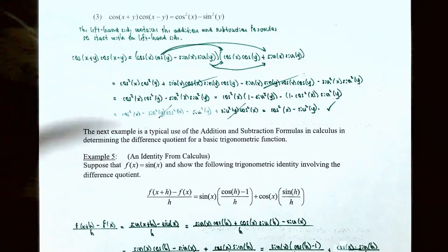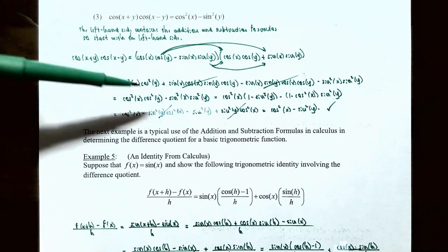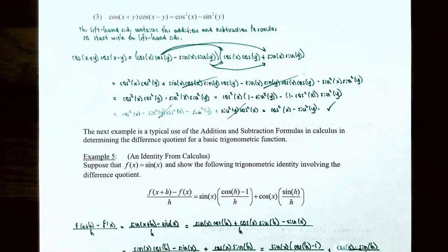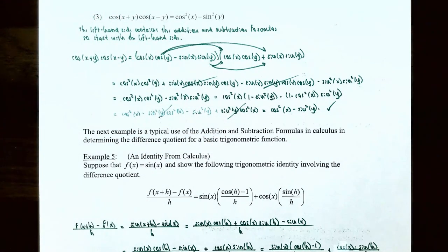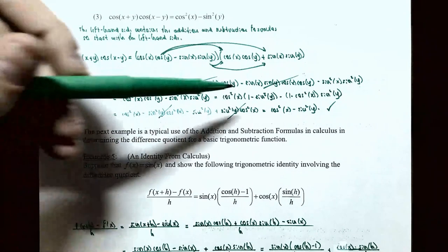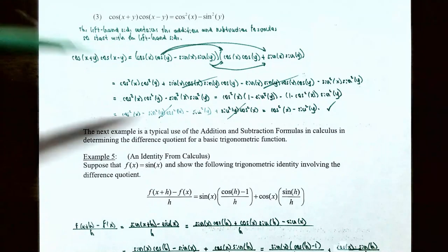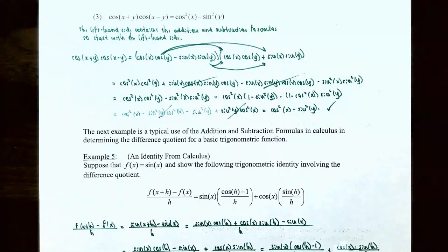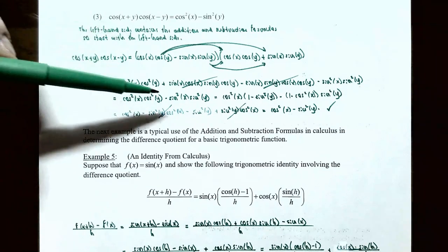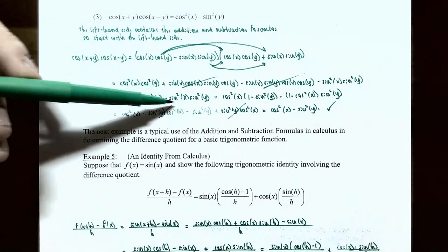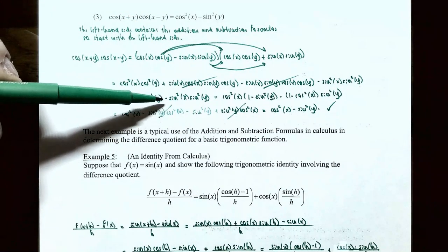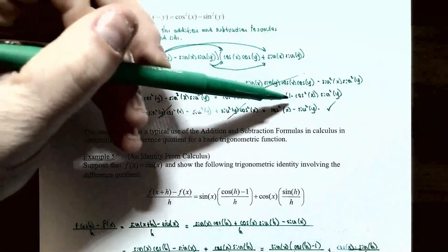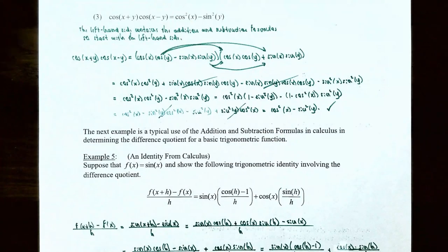We replace cosine squared of y with the quantity one subtract sine squared of y in the first term. Similarly, sine squared of x is not in the right-hand side, so we replace it using the Pythagorean identity: sine squared of x equals one subtract cosine squared of x. So the second term becomes negative times the quantity one subtract cosine squared of x, times sine squared of y.